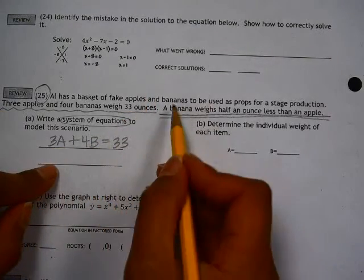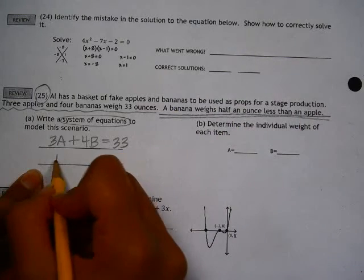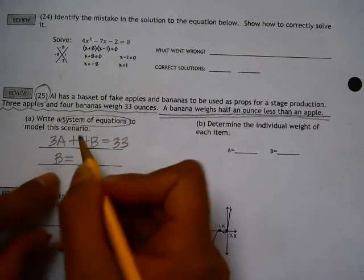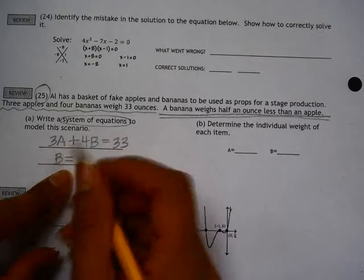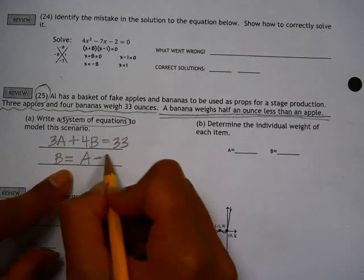Since there's two variables, we need two equations. So the second sentence is a banana weighs half an ounce less than an apple. So an apple minus 0.5.